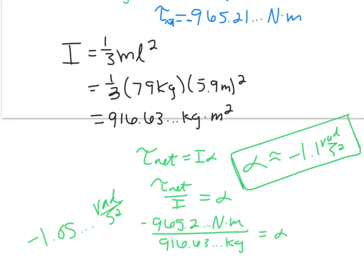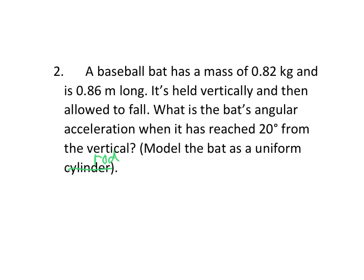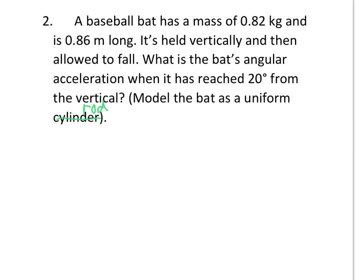Okay, I'll do one more example. Unless you feel okay with this one, then you can stop here. Okay, a baseball bat has a mass of 0.82 kilograms and is 0.86 meters long. It's held vertically and then allowed to fall. We want to know what is the bat's angular acceleration when it has reached 20 degrees from the vertical. So very similar to the last problem where you have a baseball bat, it's being held vertical and then it's allowed to fall. So we're looking at this angle right here being 20 degrees.